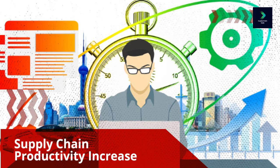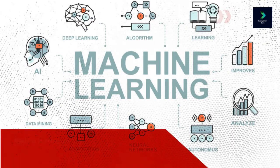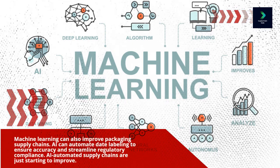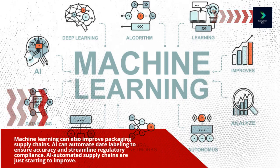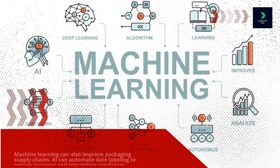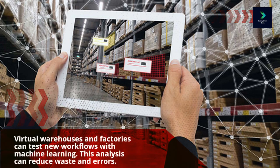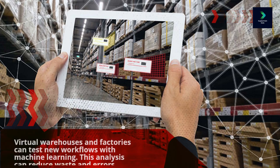Supply chain productivity increase. Machine learning can also improve packaging supply chains. AI can automate date labeling to ensure accuracy and streamline regulatory compliance. AI-automated supply chains are just starting to improve. Virtual warehouses and factories can test new workflows with machine learning. This analysis can reduce waste and errors.